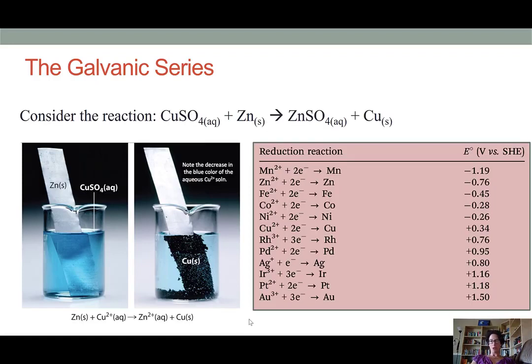In the panel in pink on the right, we can see an example of the reduction potential of several metals. If we look carefully, we can see that zinc has a redox potential of negative 0.76. However, copper has a redox potential of positive 0.34.